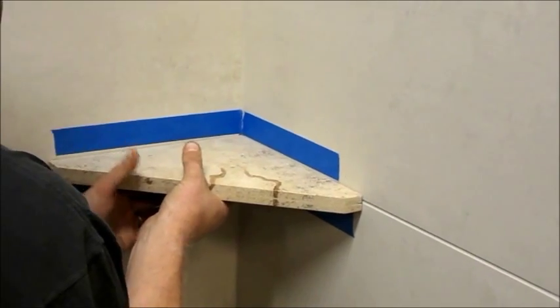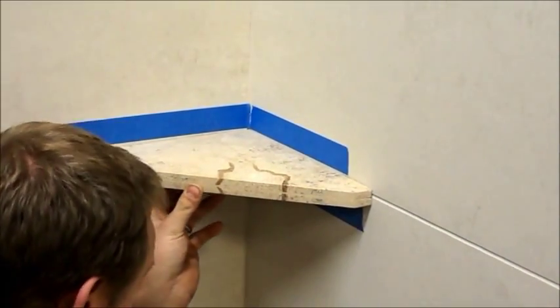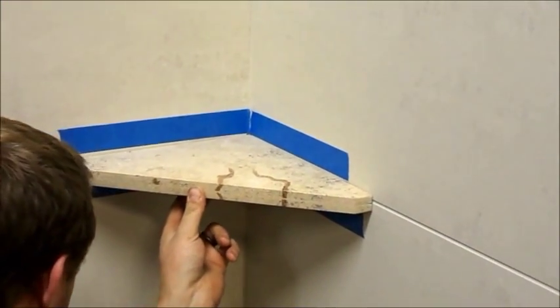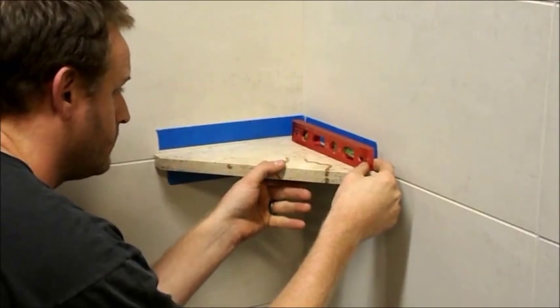Now push the shelf into location, making sure you get good contact with the shower walls. Make sure there is a slight slope toward the front edge of the shelf to allow for water runoff.